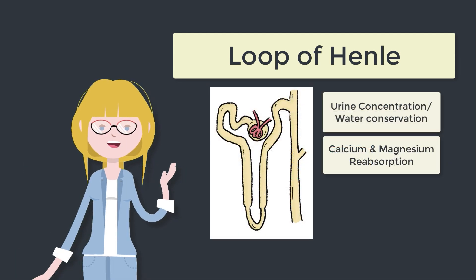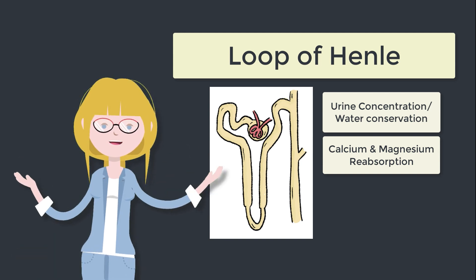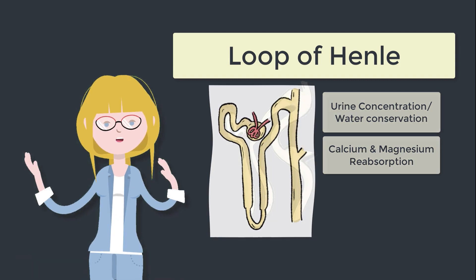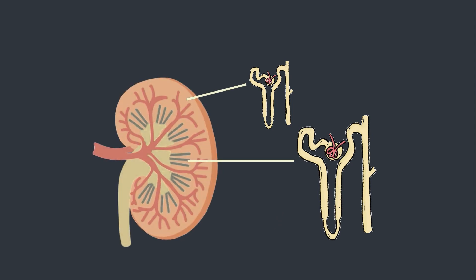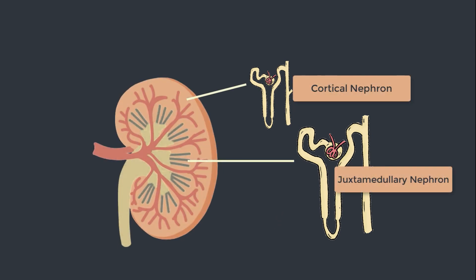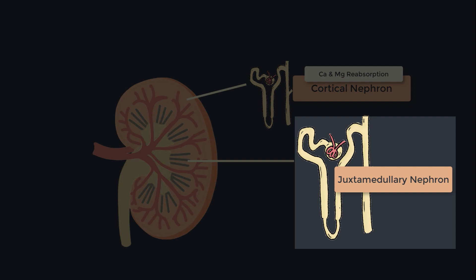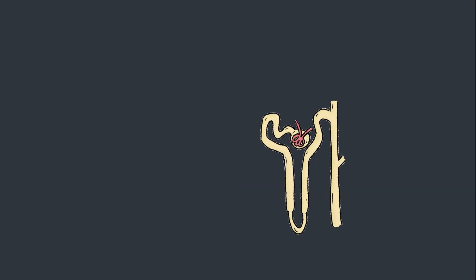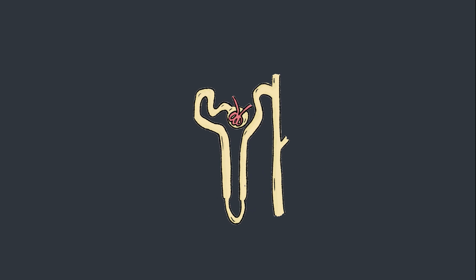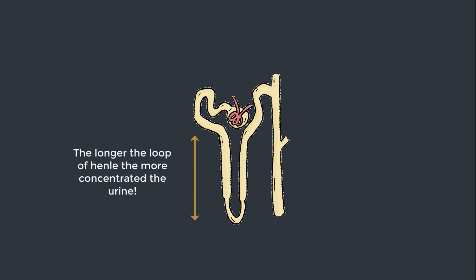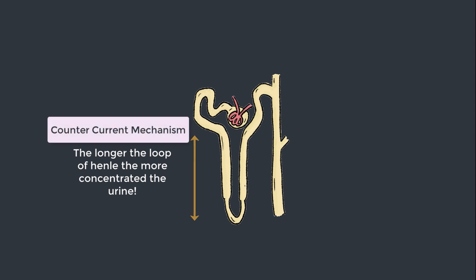Today I want to focus on how the Loop of Henle helps us to stay alive in water-deprived situations. There are two different types of nephron: the cortical nephron and the juxtamedullary nephron. Cortical nephrons have shorter loops of Henle and tend to play more of a role in electrolyte reabsorption, whilst juxtamedullary nephrons have long loops predominantly designed for water conservation. In this lesson we're focusing on the juxtamedullary nephrons, and the longer the Loop of Henle, the more water you can reabsorb and the more concentrated you can make your urine. This works via the countercurrent mechanism.